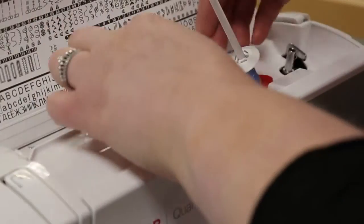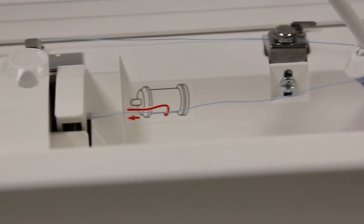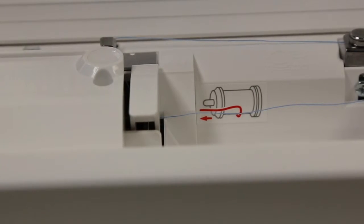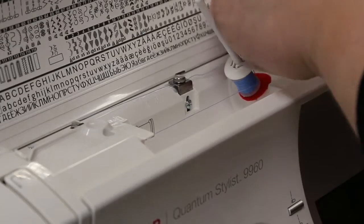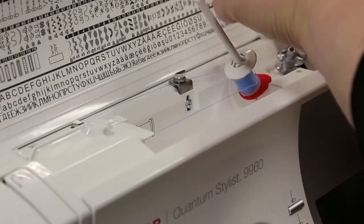Hold the thread and follow the printed guide on top of the machine, moving from left to right. Insert your thread through the top hole in a bobbin and place the bobbin on the winder spindle. Push the bobbin to the right and engage the winder. A small snap may be heard.